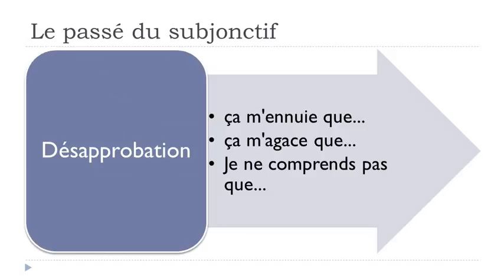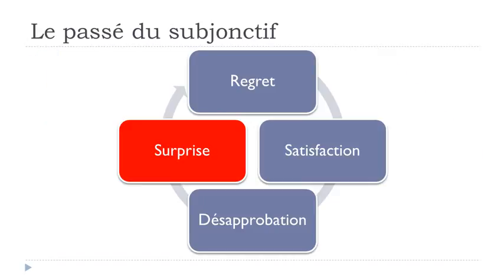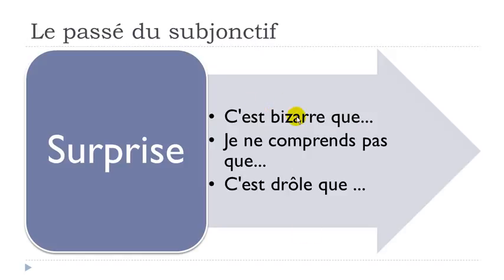For désapprobation (disapproval), we could have: ça m'ennuie que (it annoys me that), ça m'agace que (it bothers me that), je ne comprends pas que (I don't understand that). For surprise: c'est bizarre que (it's strange that), je ne comprends pas que, and c'est drôle que (it's funny that). In all these cases, if you want to express something in the past, then it should be le passé du subjonctif.